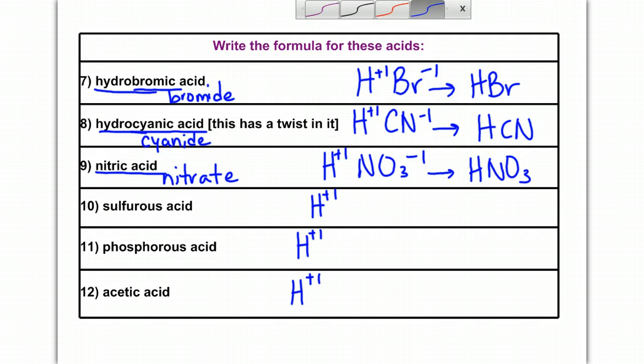Sulfurous acid, -ous means that this is sulfite. And sulfite is SO3 with a minus-two. We're going to have to switch the charges here. This gives me a ratio of two to one. So I have two hydrogens and one sulfite, H2SO3.